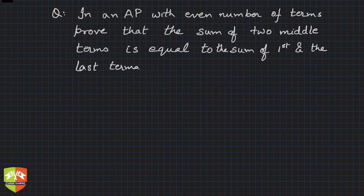Hey, welcome friends. Once again on this session on solving problems related to arithmetic progression, specifically we are dealing with middle term problems. This question says: In an AP with even number of terms, prove that the sum of two middle terms is equal to the sum of first and the last terms.